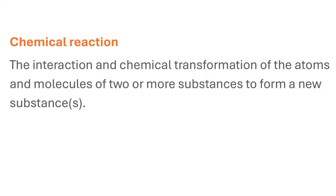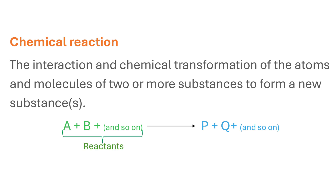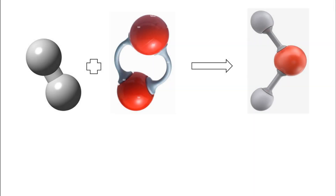A chemical reaction can be defined simply as the interaction and chemical transformation of the atoms and molecules of usually two or more substances to form a new substance or substances. The substances that take part in a chemical reaction are known as the reactants, while the new substances formed after a chemical reaction are known as the products. A chemical reaction results in the rearrangement of atoms and molecules of the reactants to form products with new atomic and molecular orientations. This is achieved through the making or breaking of bonds between the constituting atoms.